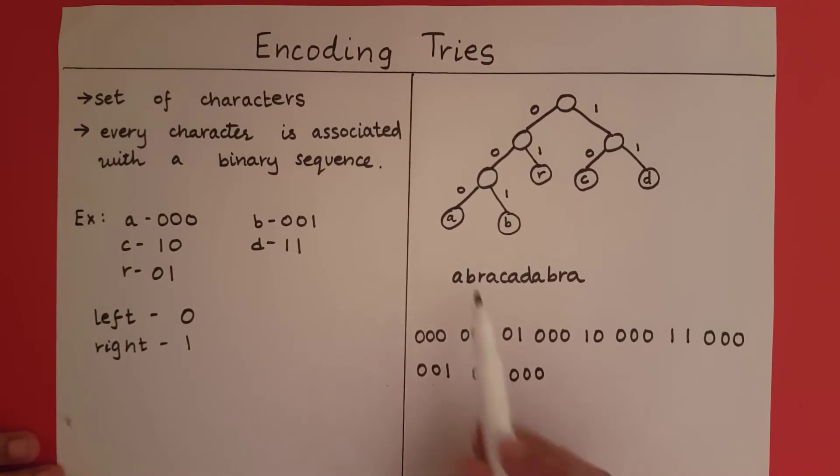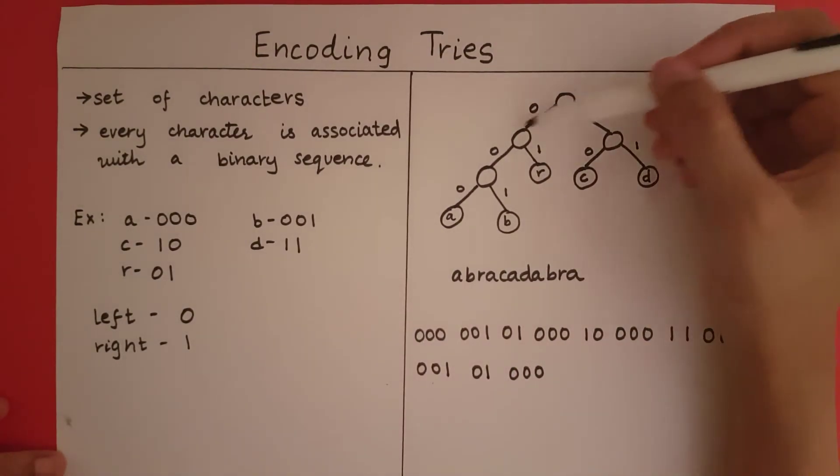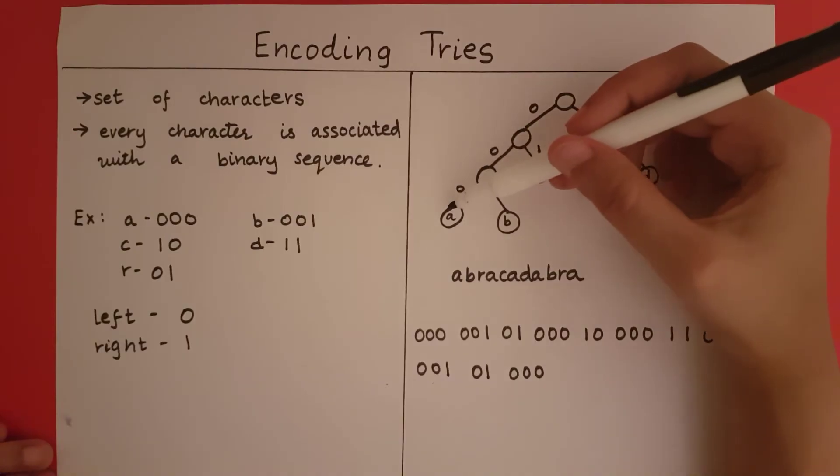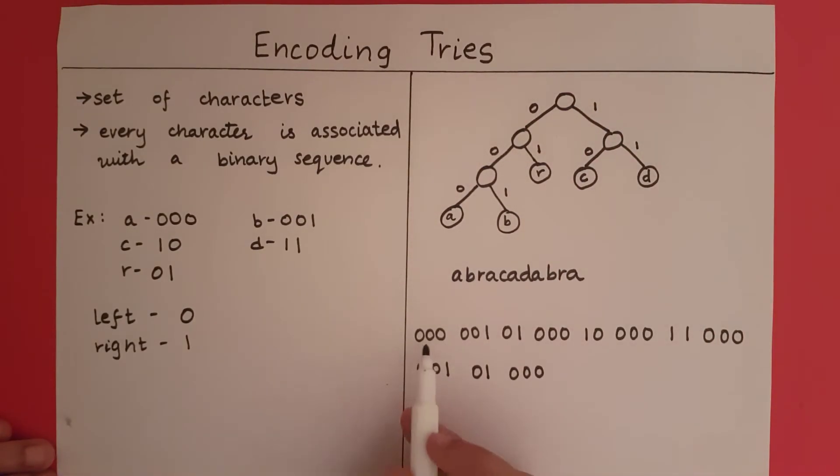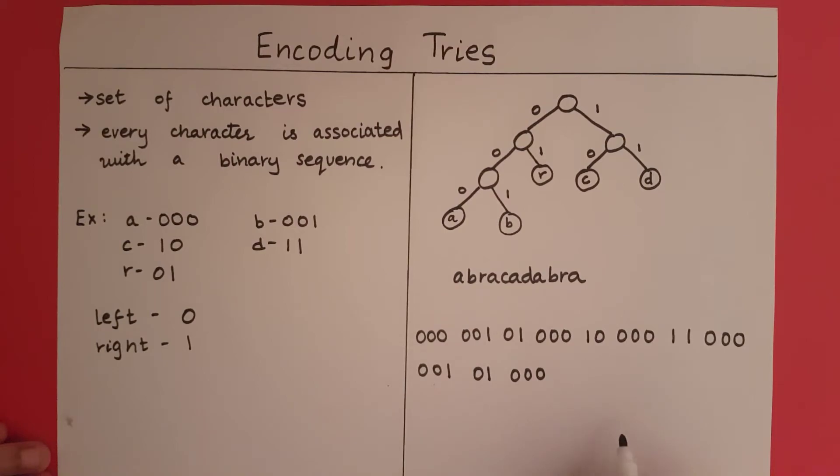So this is going to be my code for abracadabra. So now that we have seen how to encode a string, let's see how we are going to decode it. So I am going to start with my code and I should retrieve abracadabra from this code. So I will start at the first character, which is 0. So I have 0, so I will go to the left. I have 0 again, I will go to the left. I have 0 again, I will go to the left. Now I have arrived at a character. At that point, I will write that character. And so on. So this set of 0s and 1s are basically directions on how to traverse the tree. And whenever you reach a leaf node, you write the leaf node and you start back at the root.